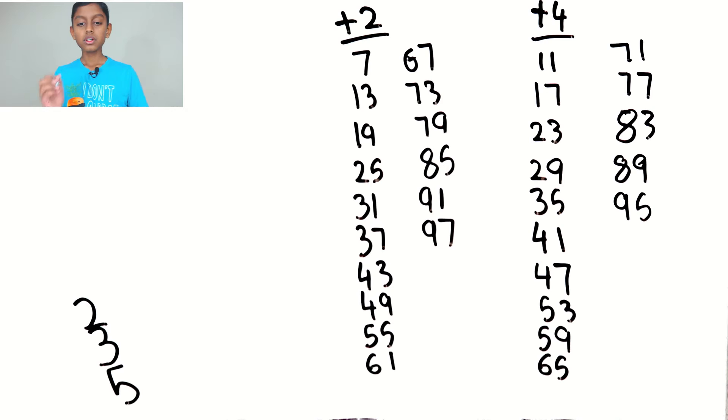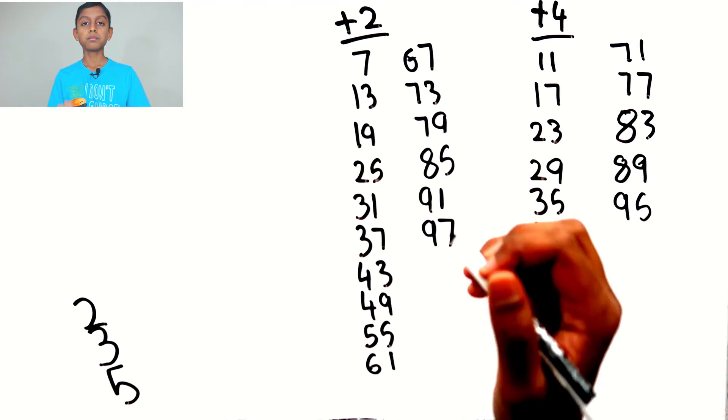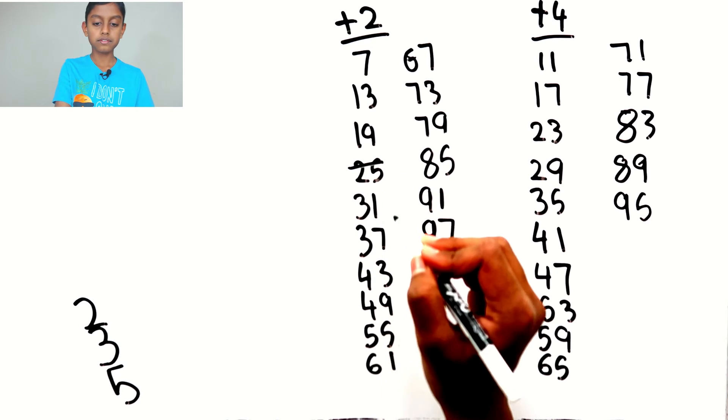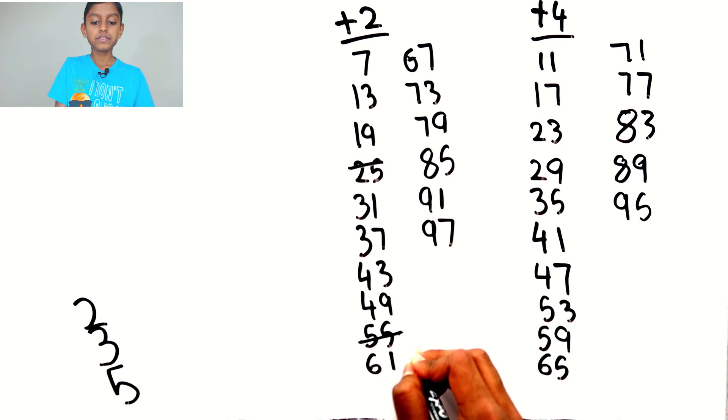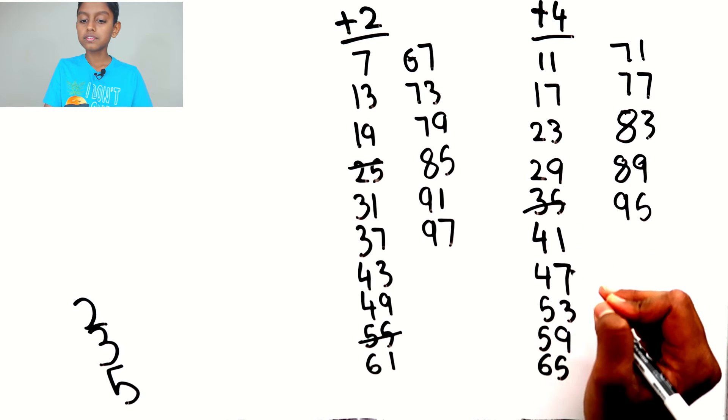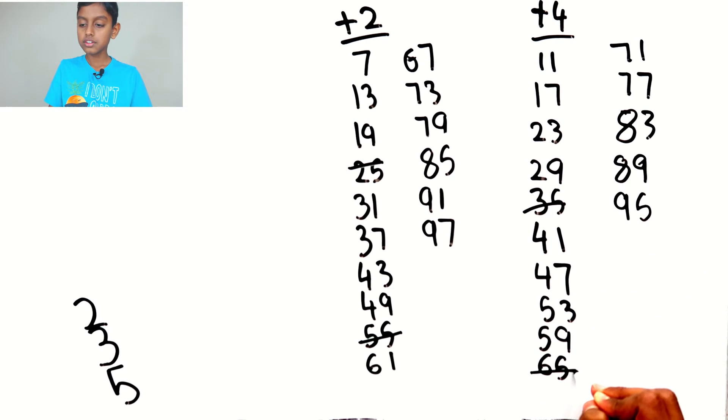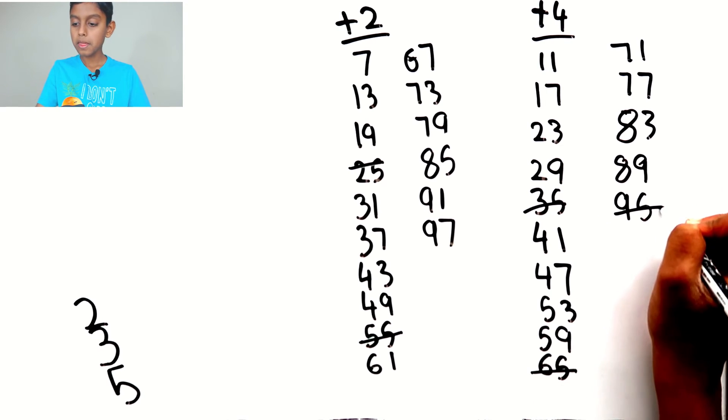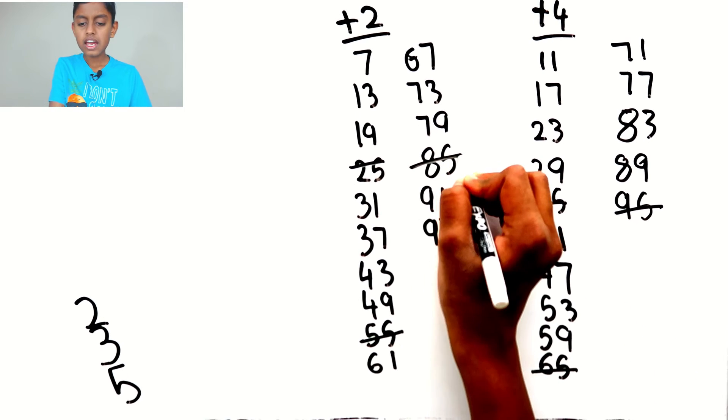Now we need to scratch off the multiples of 5, so the multiples of 5 in here are 25, 55, 35, 65, 95, and 85. These are the multiples of 5 which are scratched out.